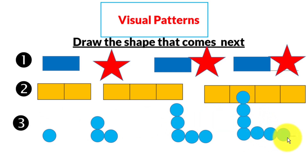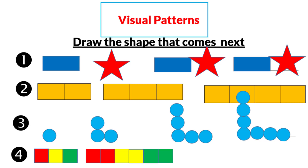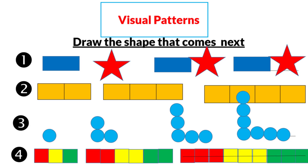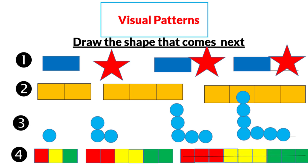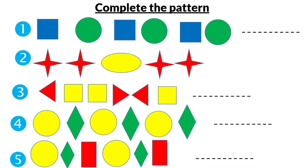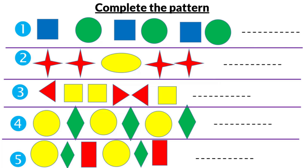Number four: red, yellow, green — then double red, double yellow, double green — so the next will be triple red, triple yellow, triple green. Number five: complete the pattern — square, circle, square, circle, square, circle.